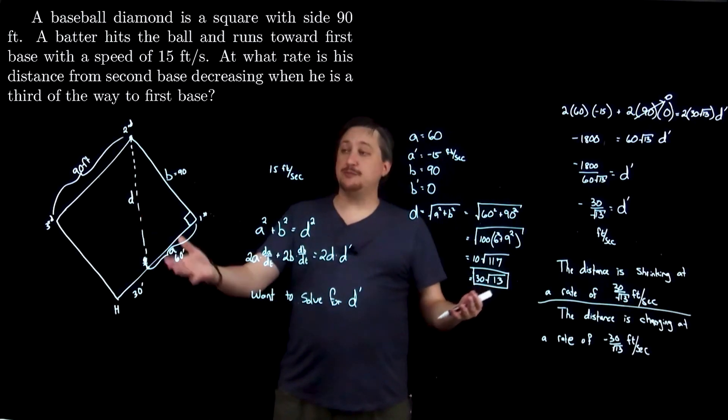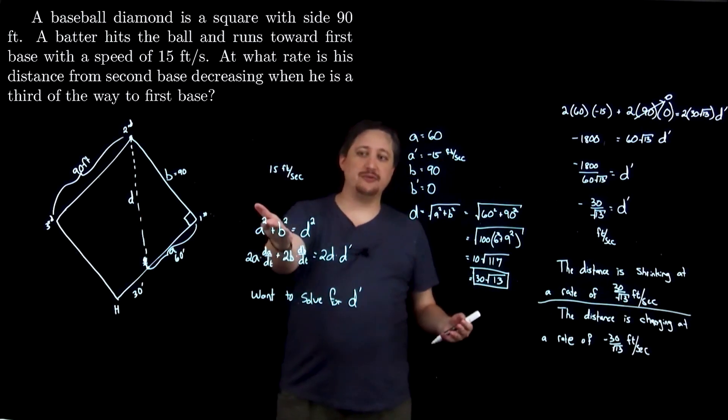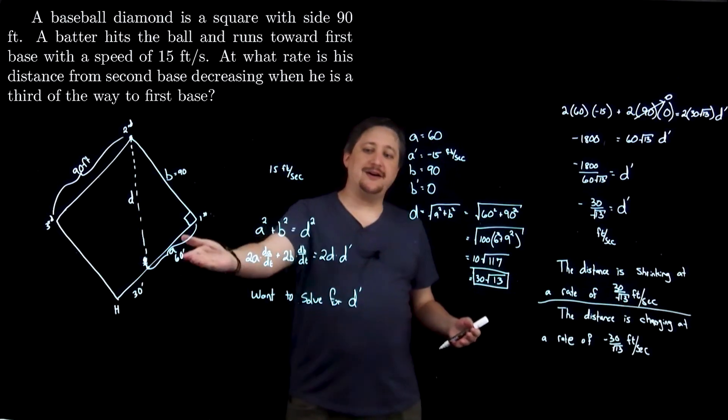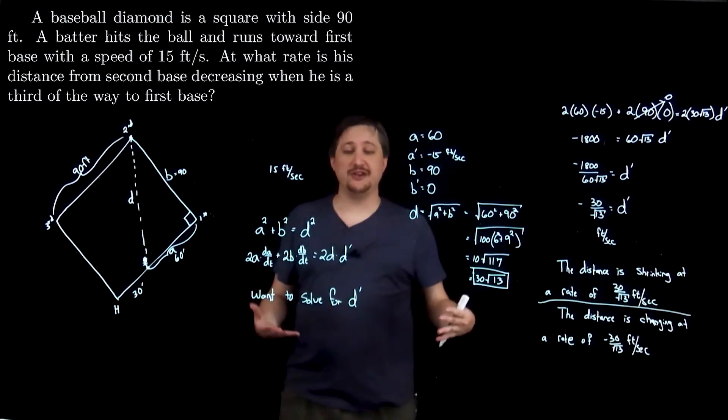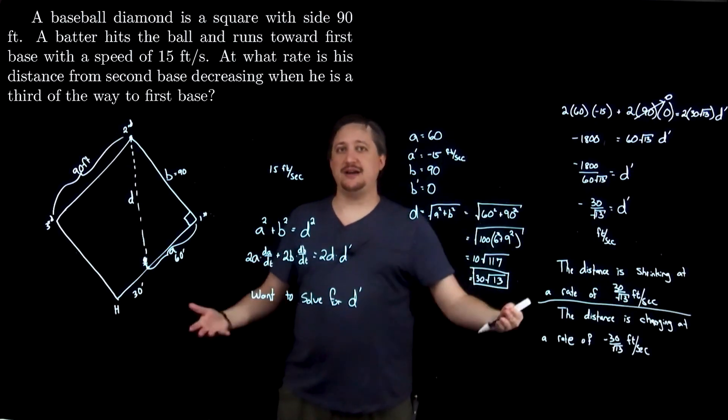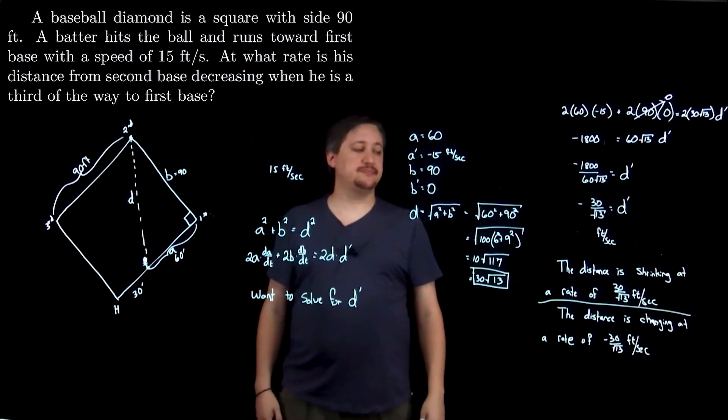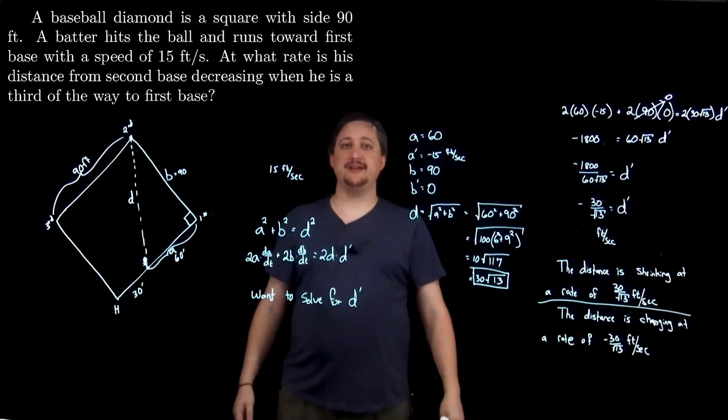So, same sort of standard process, draw a picture, try to relate the things you need, take the derivative, then plug in any values, find values that are missing if you need them, compute and find the thing you're after. So, that's that.